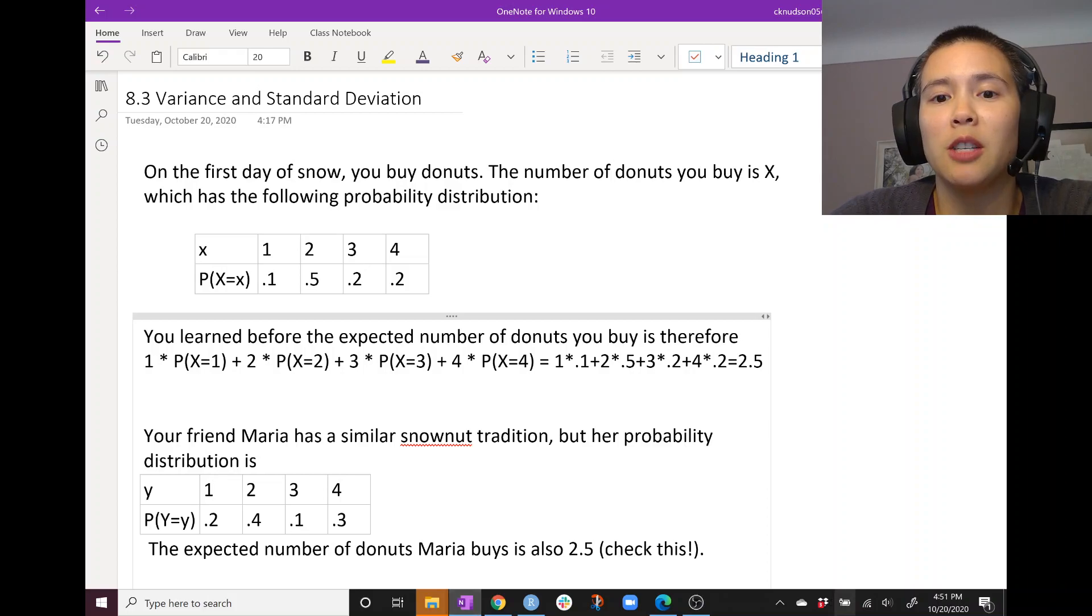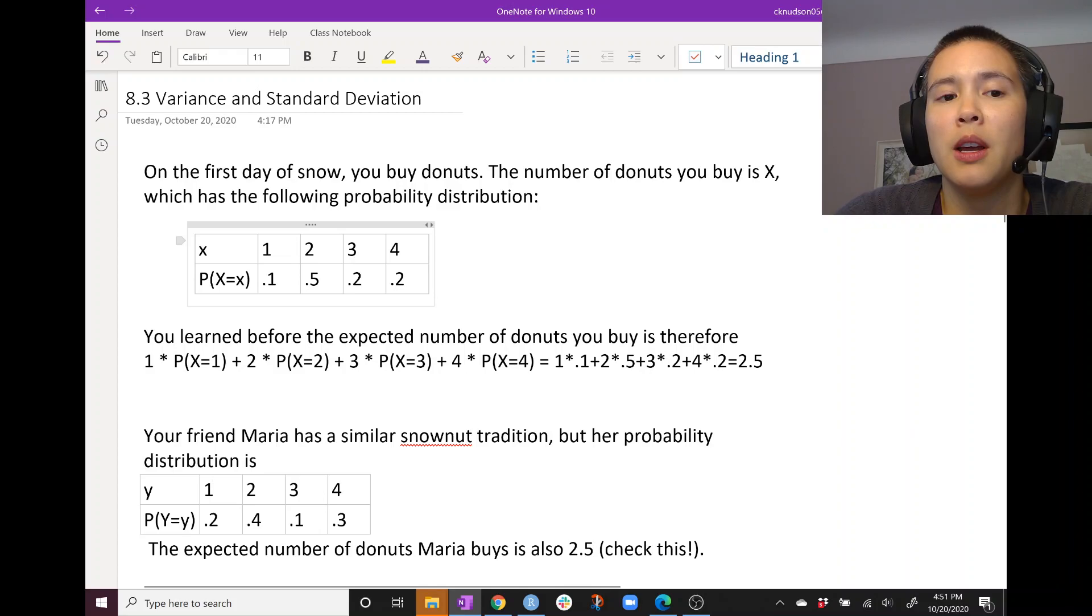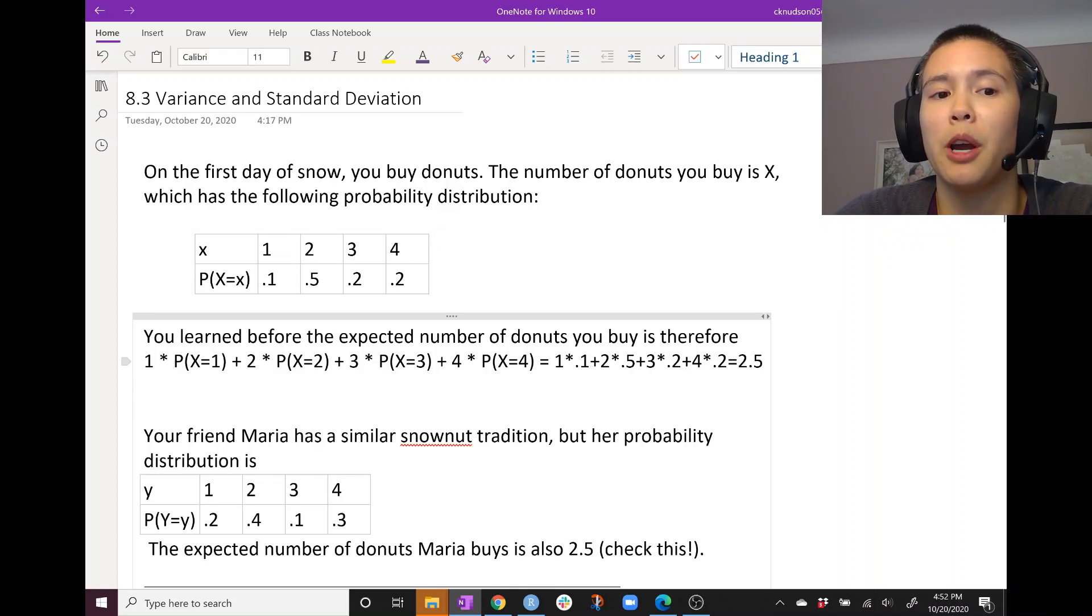In a previous video we talked about the expected value for the number of donuts that you buy and we can calculate that by taking each one of these values 1, 2, 3, 4 and multiplying it by its associated probability. So 1 times 0.1, 2 times 0.5, 3 times 0.2, 4 times 0.2 and adding all those up. So 1 times P(X=1) plus 2 times P(X=2) and so on.